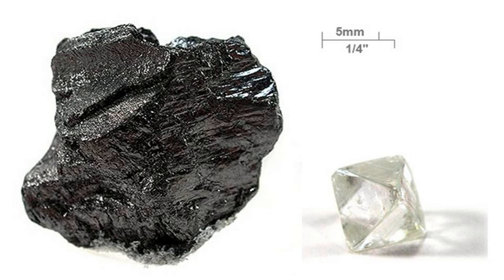There are three types of natural graphite: amorphous, flake or crystalline flake, and vein or lump. Amorphous graphite is the lowest quality and most abundant. Contrary to science, in industry 'amorphous' refers to very small crystal size rather than complete lack of crystal structure. Amorphous graphite is used for lower value graphite products and is the lowest priced. Large amorphous graphite deposits are found in China, Europe, Mexico, and the United States.